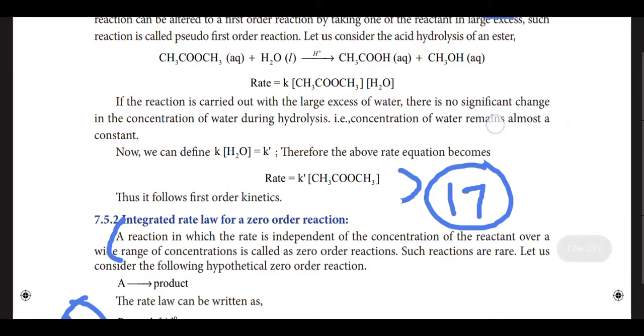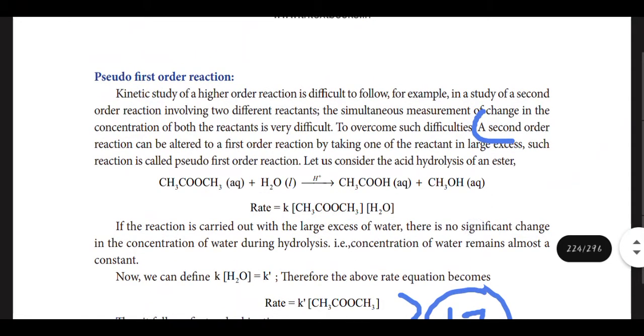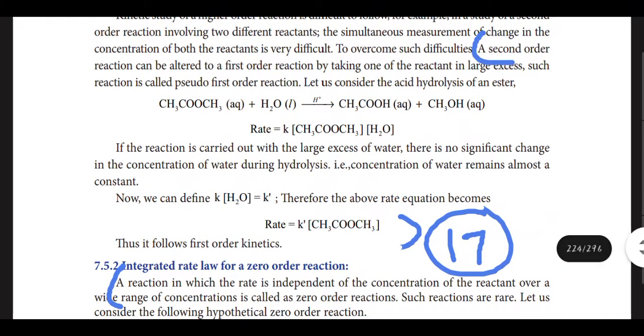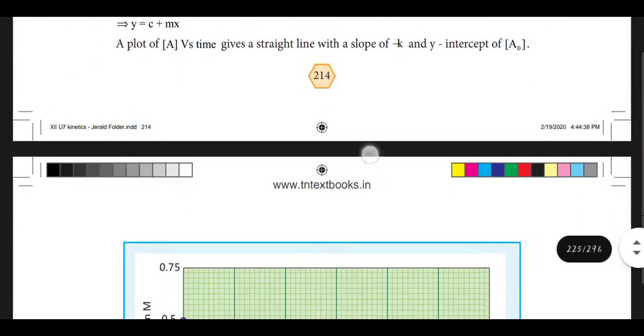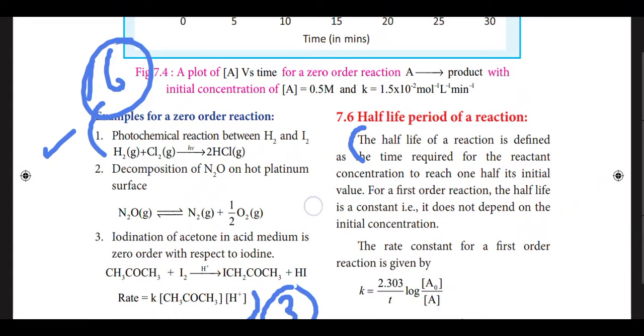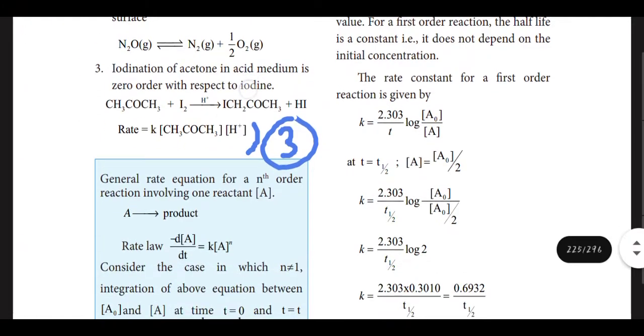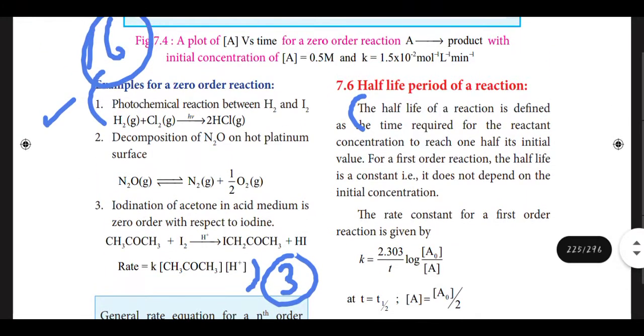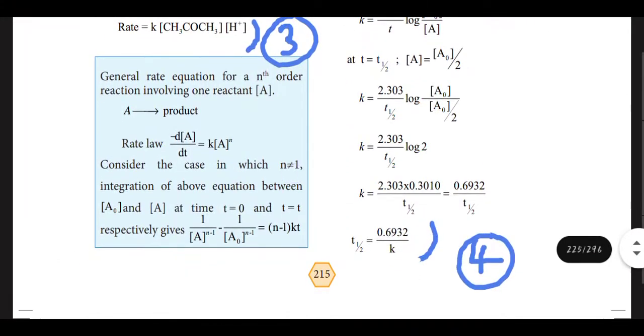Next is the 17th question, pseudo first order reaction on page 214. This is a two mark question. Second order reaction is in the material, both as three marks. Third question: integrated rate law for a zero order reaction. 16th question: example for the zero order reaction. On page 214 is the question on half-life period of a reaction. For a first order reaction, the derivation is important. I will upload a video, so go through the videos.